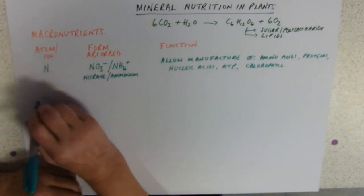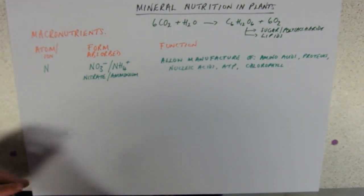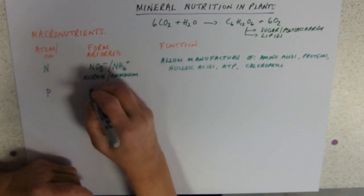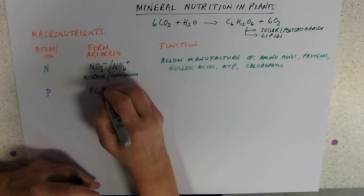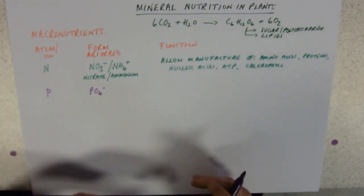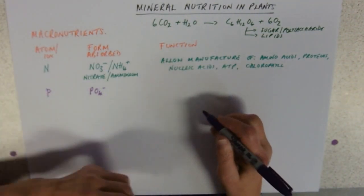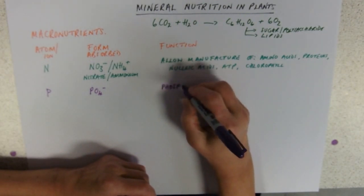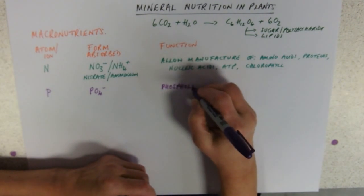Our next macronutrient that we're going to deal with is phosphorus. I'm doing these in a particular order, I'll tell you why in a minute. They're taken in in the form of phosphate ions, PO4 3-. Just thinking synoptically, what do we need them for? We need them to make stuff with phosphorus in.